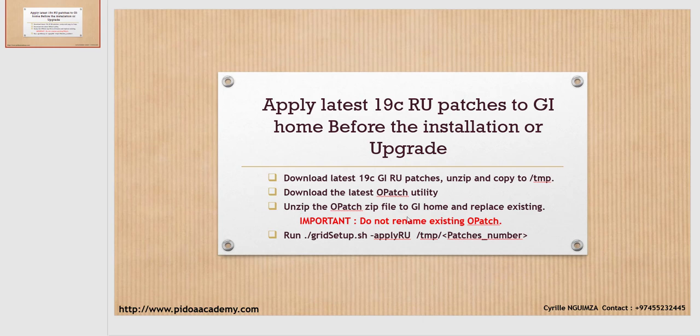Please do not rename the existing OPatch. Normally what we usually do is rename the existing OPatch utility in our Grid home, and then unzip the new downloaded one to that Oracle home or Grid Infrastructure. But in this case, do not rename the existing OPatch. Instead, unzip the newly downloaded one and replace the existing files.